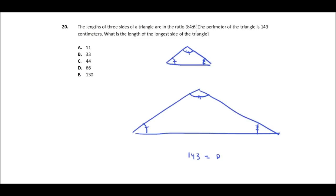What I'm going to do is say, if this large triangle has a ratio of 3 to 4 to 6, I can imagine a smaller triangle that has sides of 3, 4, and 6.